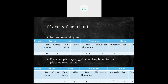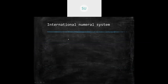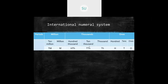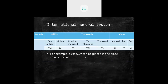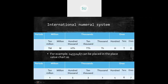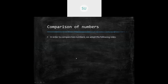In the international numeral system, up to five digits it is the same as the Indian numeral system — up to ten thousand. But after ten thousand, instead of one lakh we have hundred thousand, then one million, then ten million, then hundred million which equals ten crores. A sample number in the international place value chart reads as fourteen million, five hundred and thirty two thousand, four hundred and sixty seven.